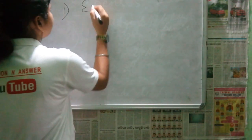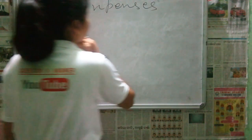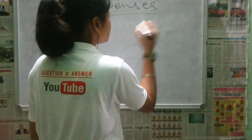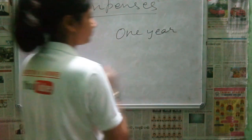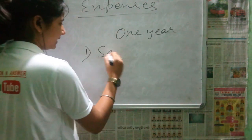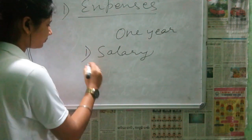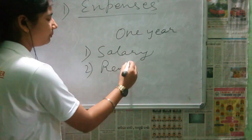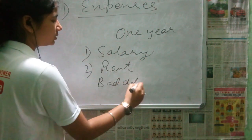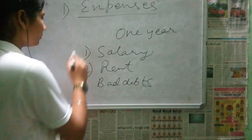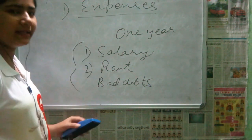First of all, we will discuss expenses. Expenses are the costs that we incur within one year, like salary which is paid per month, rent per month, and many more. These are the expenses that we do within one year.